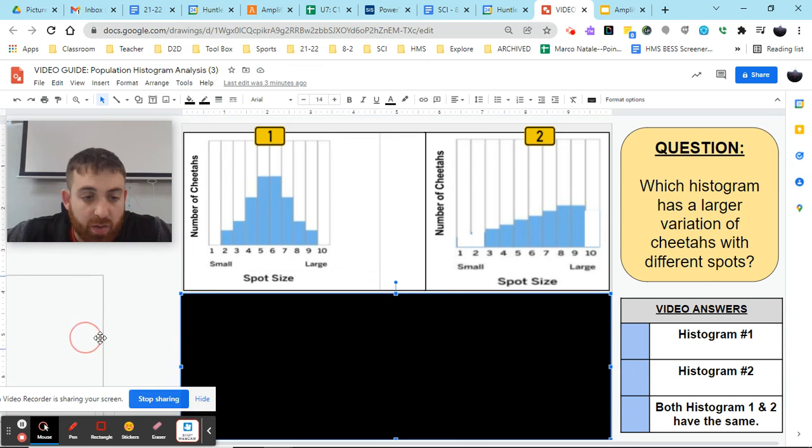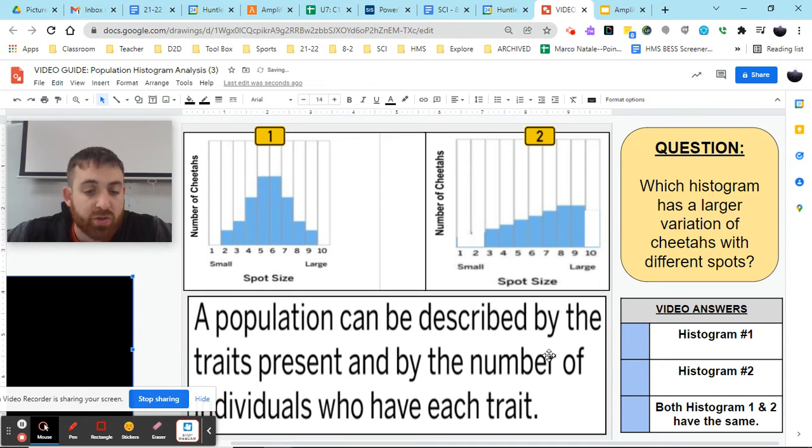When we look at our histograms here, we first need to know that a population can be described by the traits present, and by the number of individuals who have those traits. So, we know, looking at our two histograms here, we have 10 possible variations, but in this first histogram, each blue bar represents the number of individuals with that trait.